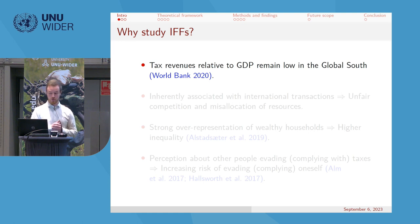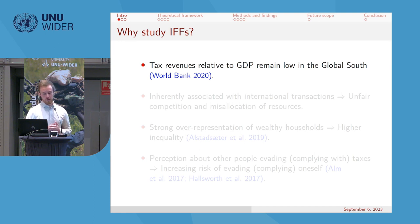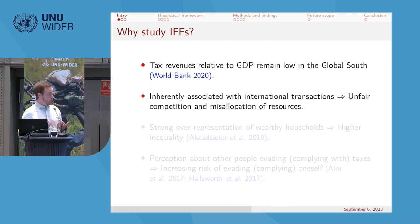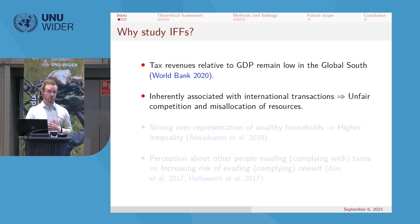Illicit financial flows are inherently associated with international transactions, which could create unfair competition and misallocation of resources. For example, an international firm has the opportunity to engage in profit shifting, which domestic firms do not have — and that could create unfair competition.